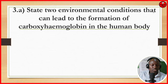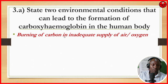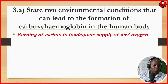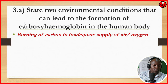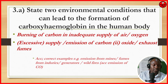Question 3B: environmental conditions that can lead to formation of carboxyhemoglobin in the human body. Carboxyhemoglobin is a very dangerous compound that can lead to death. Number 1 is burning of charcoal in a poorly ventilated room with inadequate supply of air and oxygen, causing formation of carbon monoxide. When carbon monoxide combines with hemoglobin, it forms carboxyhemoglobin. This can also come from fumes or any other burning substance.